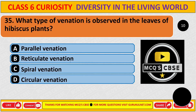What type of venation is observed in the leaves of a hibiscus plant? The correct answer is B: reticulate venation.